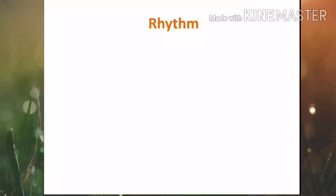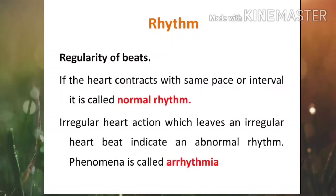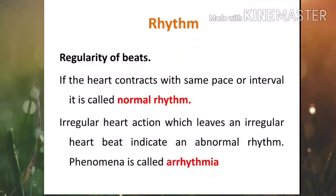Rhythm is the regularity of beats — it is the pace with which the heart contracts, meaning the regular interval between each heartbeat. If the heart contracts with the same pace or interval, it is called a normal rhythm. An irregular heartbeat indicates an abnormal rhythm, and this phenomenon is called arrhythmia.